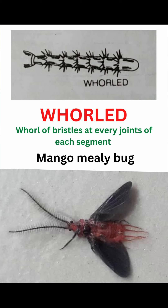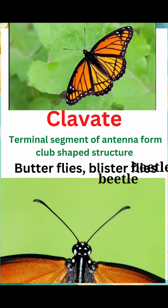Next is clavate type of antenna. In this, the terminal segment of the antenna forms a club-shaped structure. For example, butterflies and blister beetle.